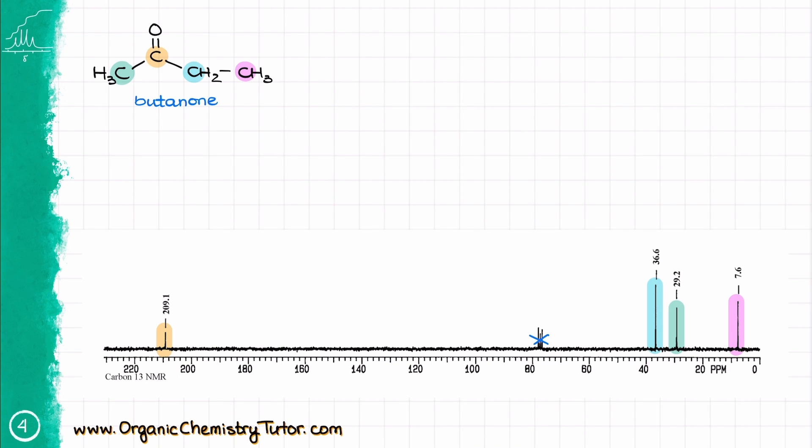And you might be wondering why the CH3 groups here are all of a sudden not identical like in the previous case. Well, if we pay close attention to what those CH3 groups are attached to, we'll see that one of them, the one on the left, the green one, is directly connected to the carbonyl,